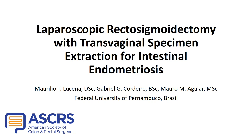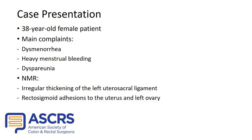Presentation of a laparoscopic rectosigmoidectomy with transvaginal natural orifice specimen extraction for intestinal endometriosis. A 38-year-old female patient whose main complaints were dysmenorrhea, heavy menstrual bleeding, and dyspareunia. Preoperatory nuclear magnetic resonance showed irregular thickening of the left uterosacral ligament, as well as rectosigmoid adhesions to the uterus and left ovary.